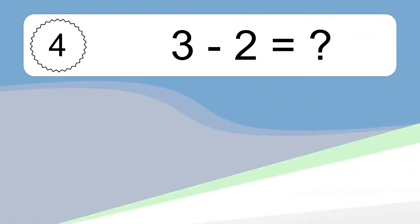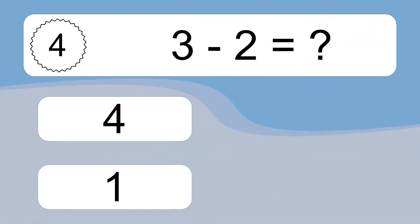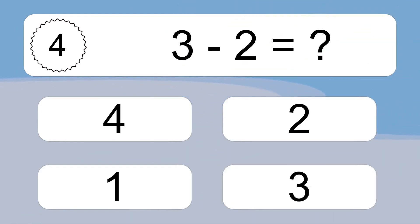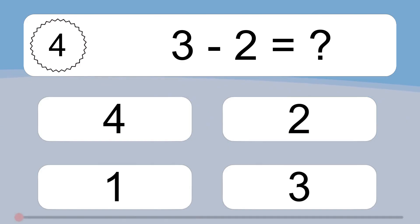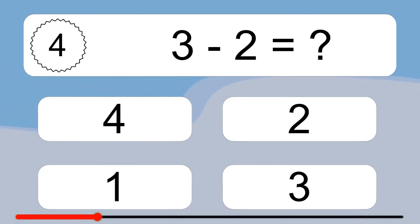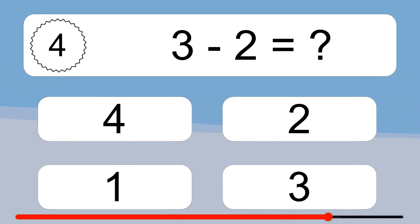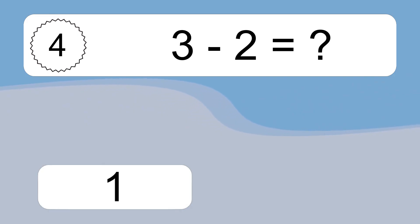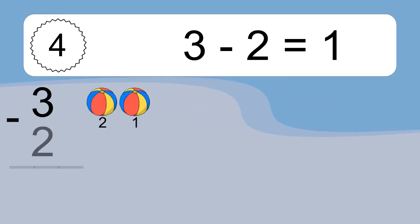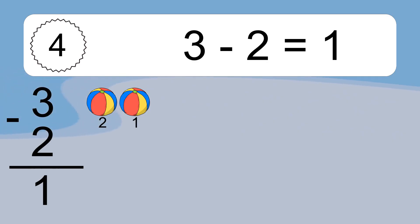3 minus 2 equals what? 3 minus 2 equals 1. Let's count it. 2, 1.